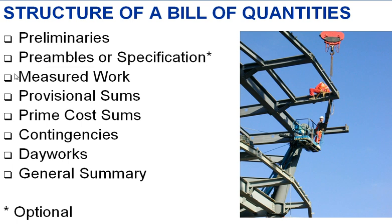Then comes the main body of the measured works, measured using a standard method of measurement such as the ARM. Next we would have a listing of all the provisional sums. Provisional sums account for items which may not be measured fully at the time in which the documentation is put together — these would be cited as provisional items. Next we have prime cost sum, which is a sum of money provided for the employment of nominated contractors or suppliers nominated by the client.